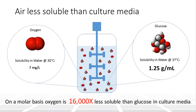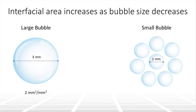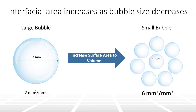The amount of dissolved oxygen is impacted by two major factors: interfacial area and residence time. Smaller bubbles have a larger surface area to volume ratio, or interfacial area, than large bubbles. Increasing the interfacial area allows oxygen to dissolve more easily and quickly into the culture media.